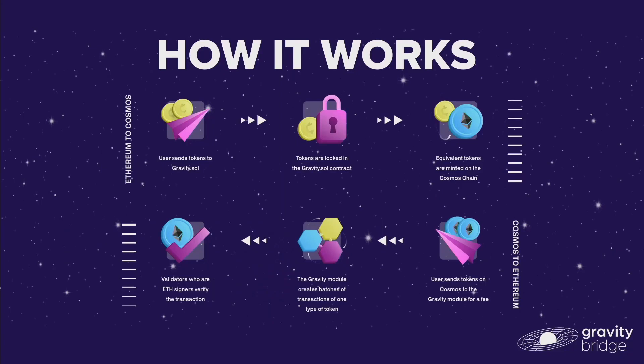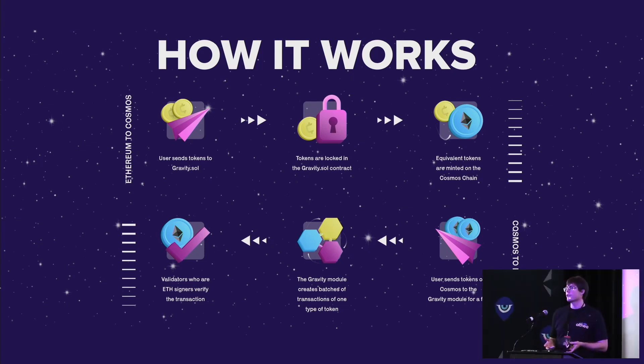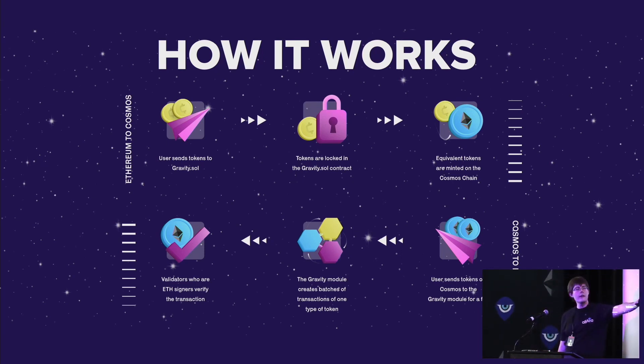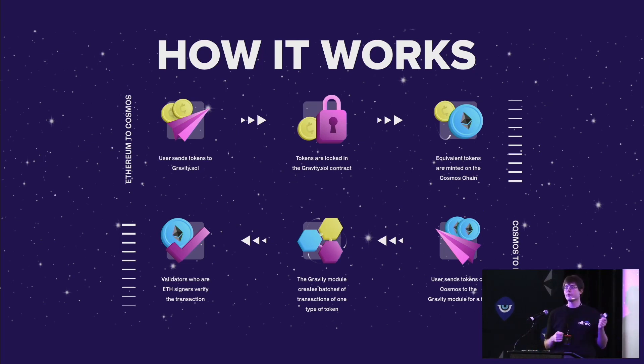This is where Gravity starts to get really generically useful to other projects in the ecosystem. Because we have defined Gravity as a module that any Cosmos-space chain can use, anyone can run one of these bridges and start to aggregate transactions to get these low costs. The bridge works by people depositing, and when they withdraw, their transactions are bundled together into a batch that executes all at once on Ethereum, acting as a simple roll-up and reducing transaction costs.